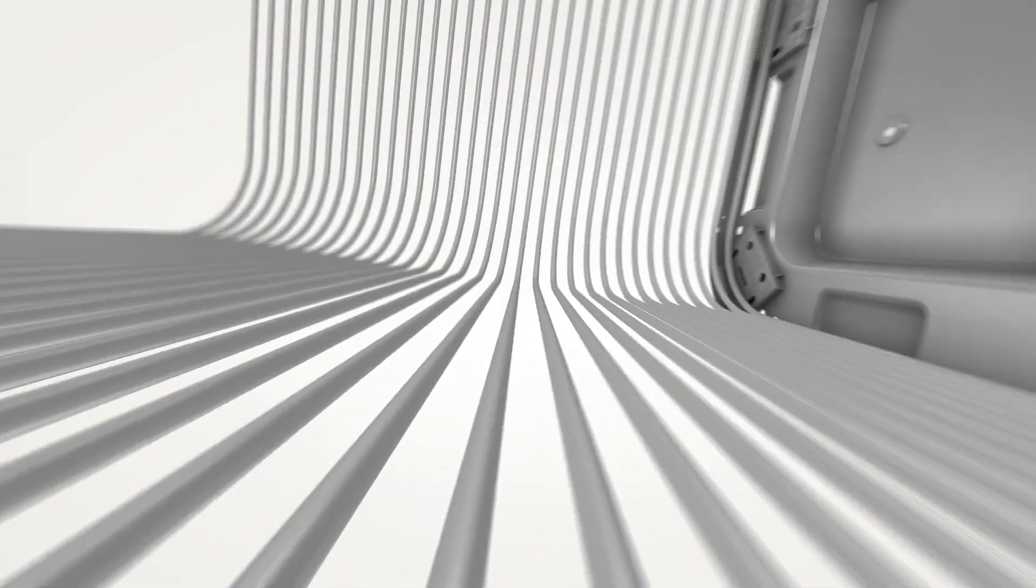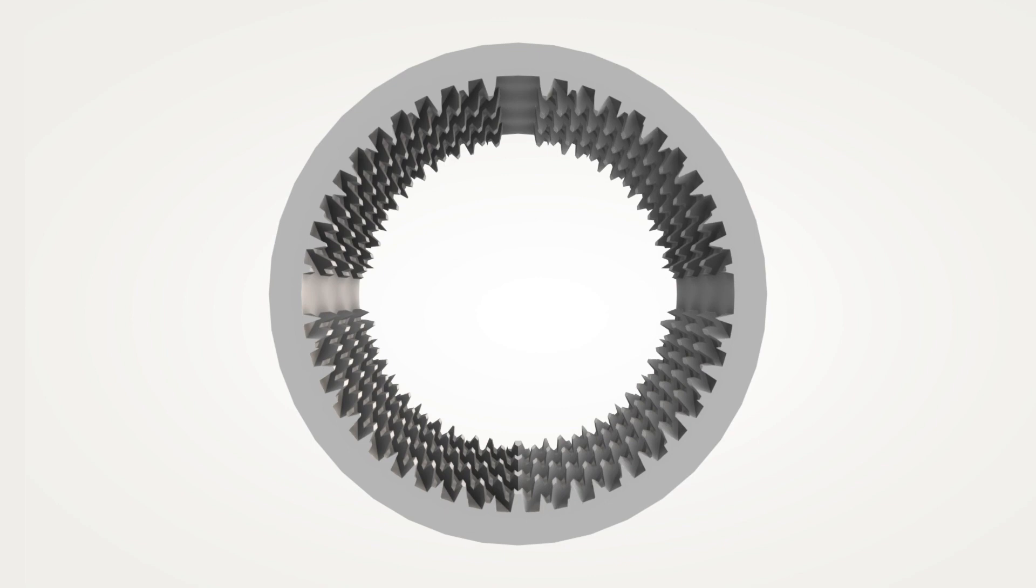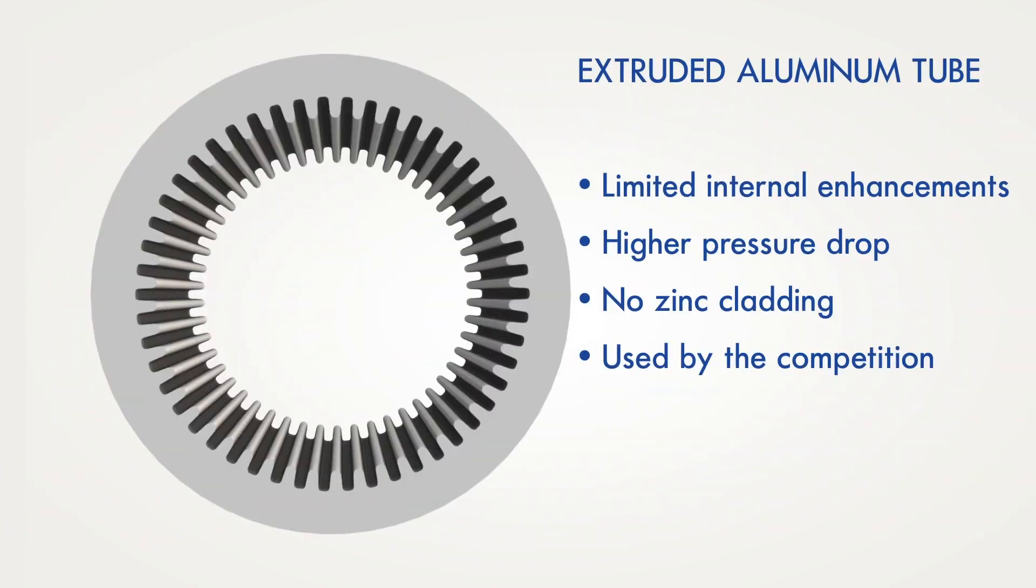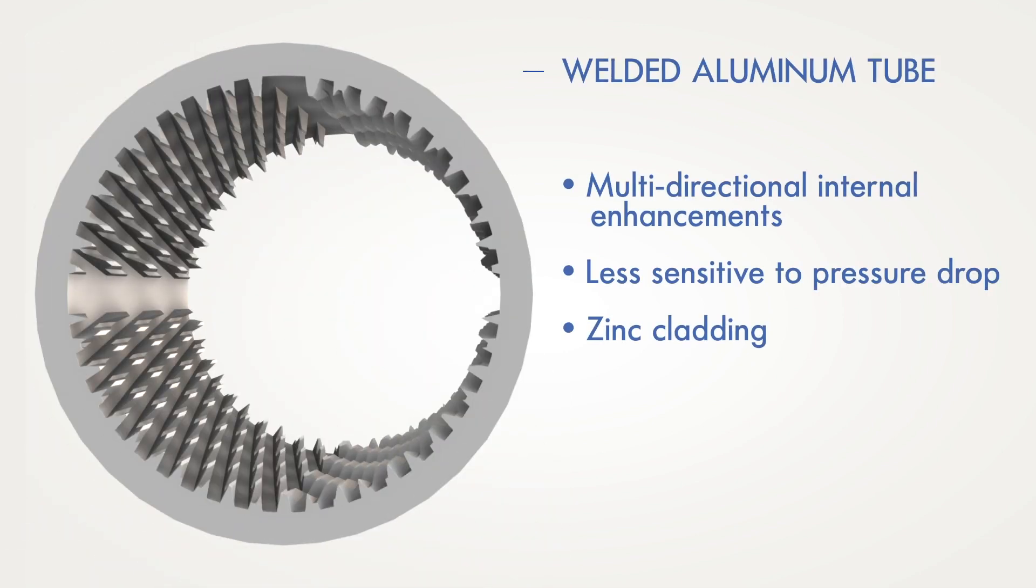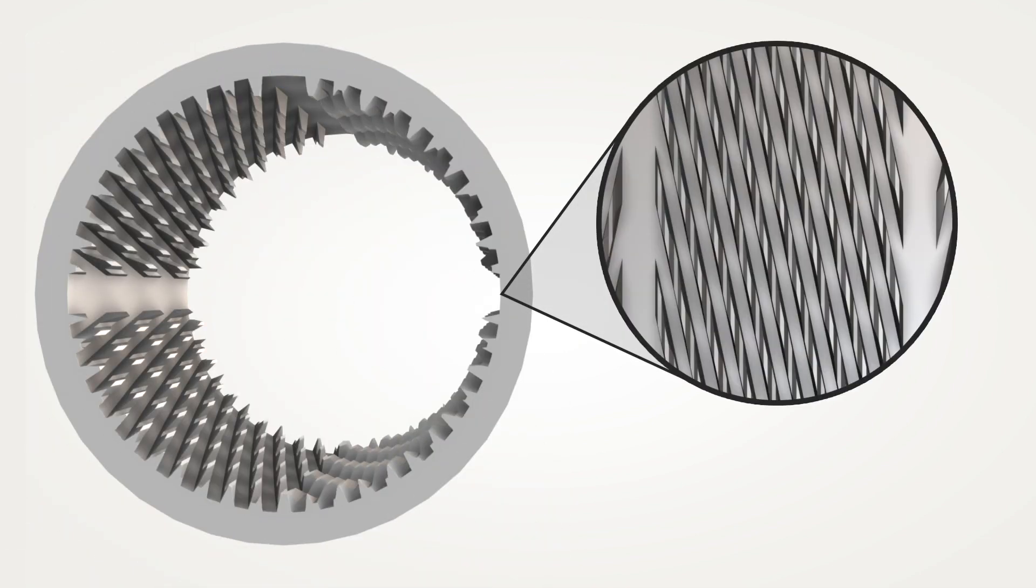Our aluminum tube coils are unlike any other in the industry. They are welded, unlike extruded aluminum which has limited internal wall enhancements, higher pressure drop and is not capable of zinc cladding. Welding allows us to optimize the internal wall of the tube with an embossed pattern of angled enhancements for added benefit.